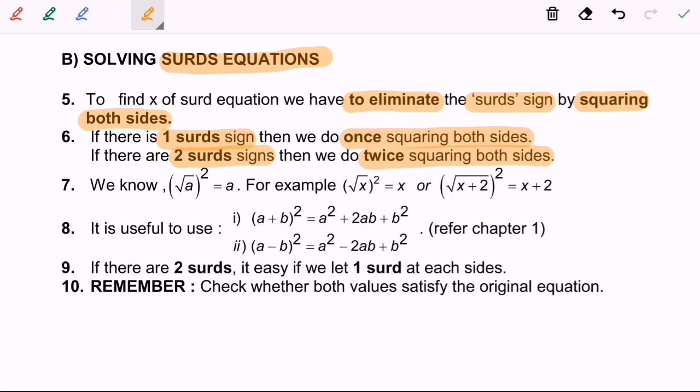Here's the method. We know, bracket square root of a squared is equal to a. For example, square root of x squared, we can simplify and it becomes x. Or, square root of x plus 2, we squared it and we will have x plus 2.